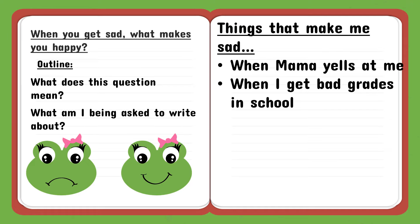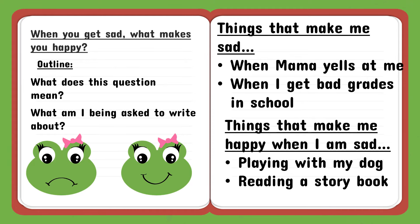Once you can answer those questions, it becomes easy to draft your outline. In your outline, talk about things that make you sad — maybe when mama yells at you, or when you get bad grades in school. Then talk about things that make you happy when you're sad, since that is what the question is really about. For example, playing with your dog makes you happy, or reading a storybook makes you happy. Once you've done this, your outline is perfected and you can use these points to develop your essay.